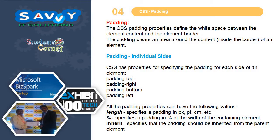The CSS Padding properties define the white space between the element content and the element border. Let us assume this is the content space and this is the border space — this space is defined as Padding.